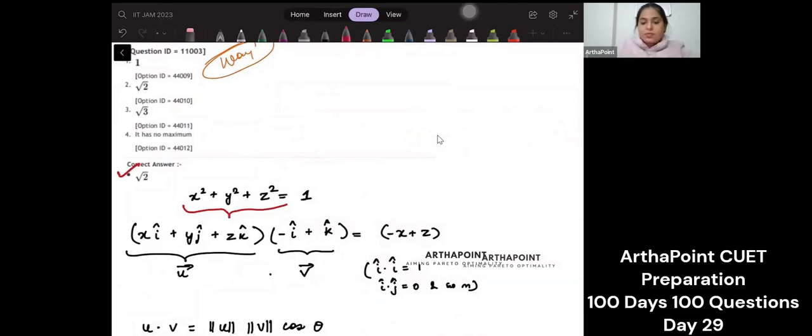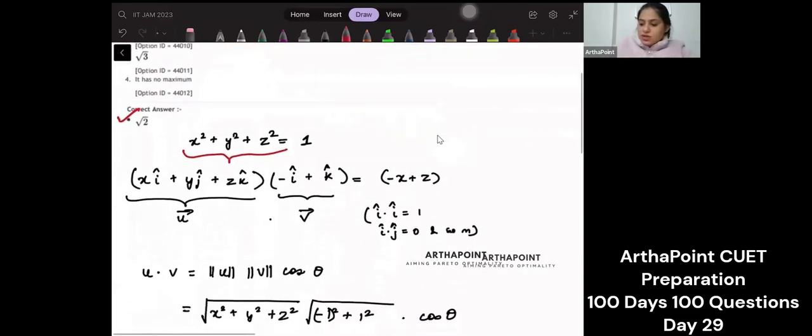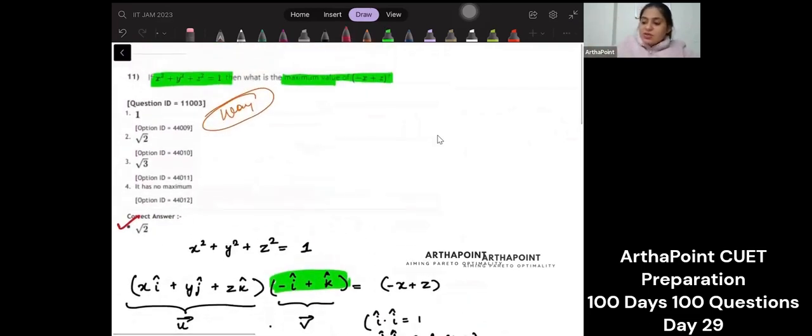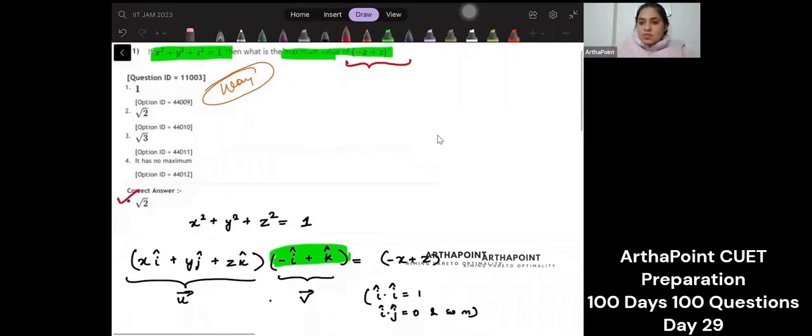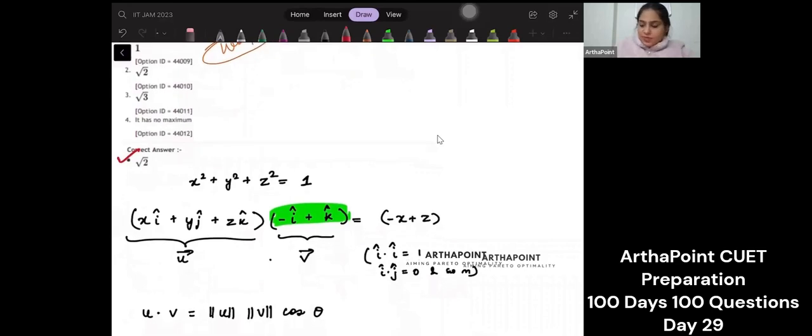x square plus y square plus z square. This is given to me. First, let's just think about this. So I have gone ahead and written x iota plus yj plus zk. And I have multiplied this with minus i plus k. Just think why I have done this. This is asking me to find minus x plus z. Think it. Which means that if I go ahead and I write this as xi plus yj plus zk. And I do a dot product with minus i plus k.